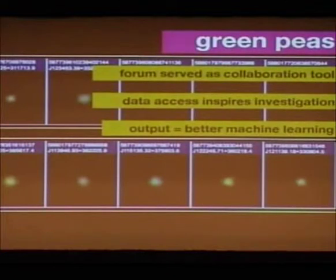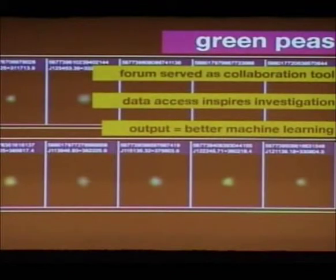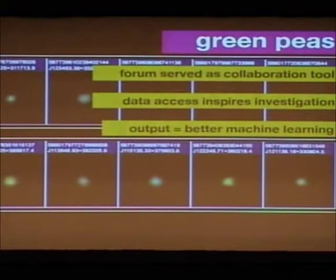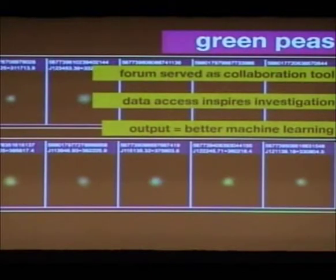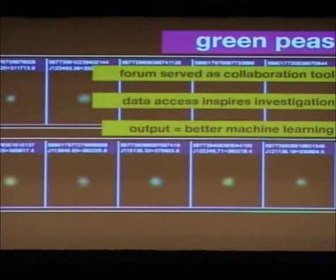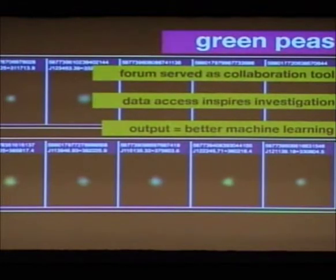The forum served as a collaboration tool — people with science degrees and people without were debating over what these Green Peas were. Galaxy Zoo doesn't just give you the image and that's it; they also allow for deep data diving. If you're looking at a galaxy that seems interesting, you can investigate it further because it gives you free access to all the spectrum data. One of the good things about all the human output, going back to robots, is that it does lead to better machine learning — so it's kind of a loop function.